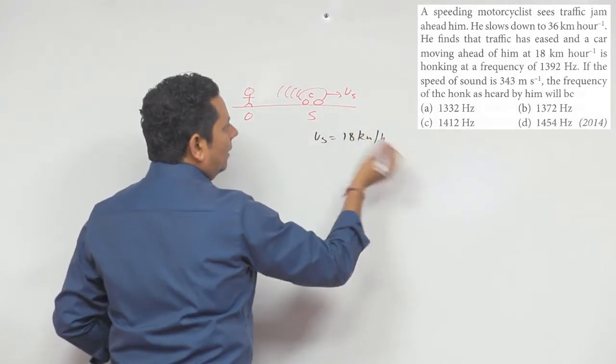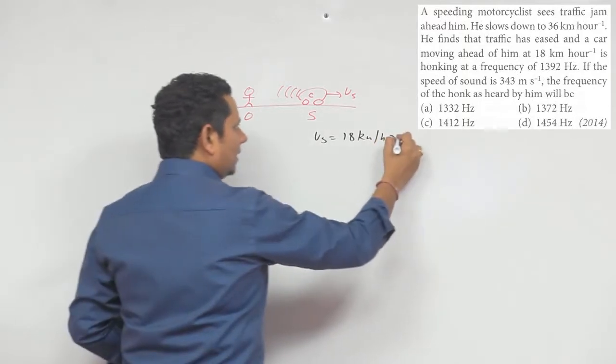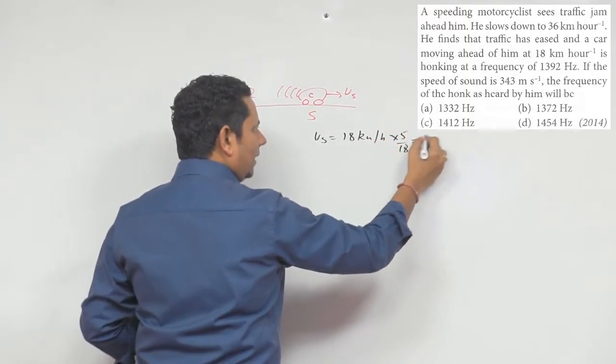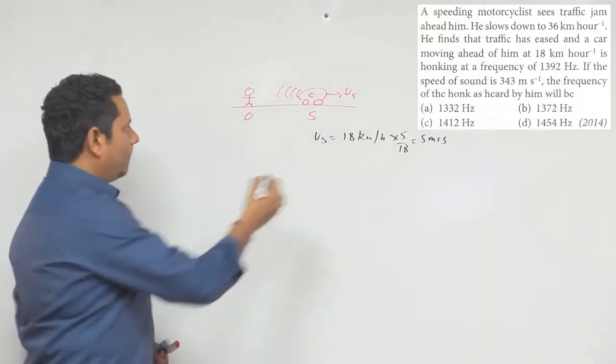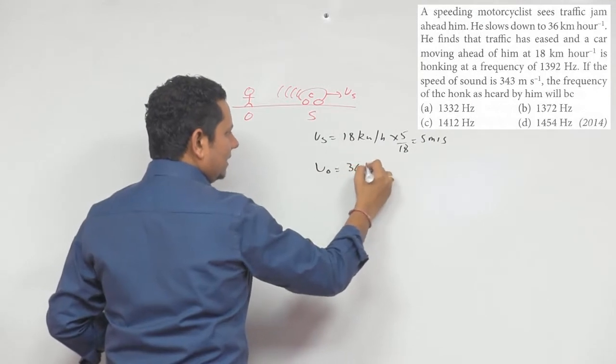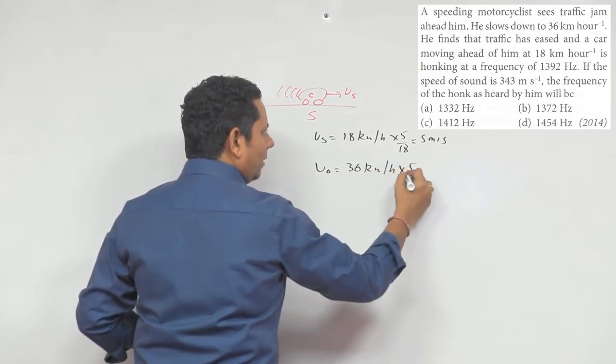18 kilometer per hour, when we convert to meter per second, we multiply by 5/18, which gives 5 meter per second. That's the source speed. The observer is moving at 36 kilometer per hour, which when converted gives 10 meter per second.